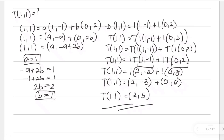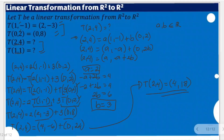We started with the assumption of a linear combination, solved for the variables, then applied the transformation. This is how you solve for a linear transformation from R² to R², given the already available linear transformation values. Thank you very much for watching.